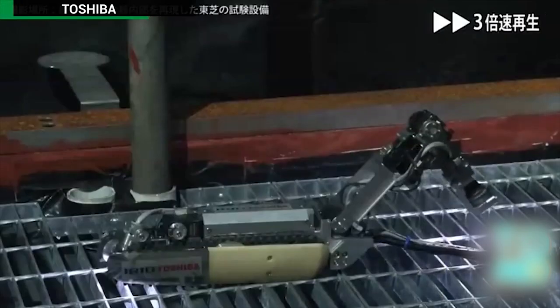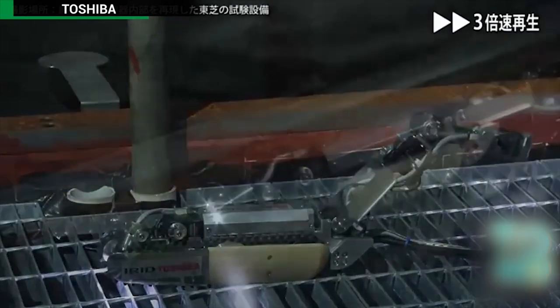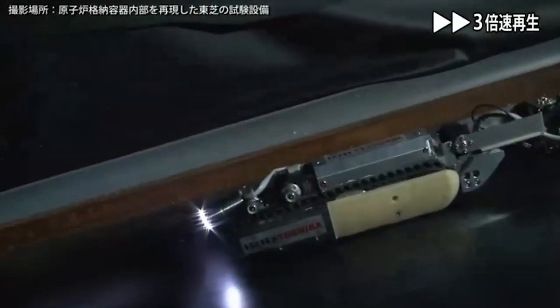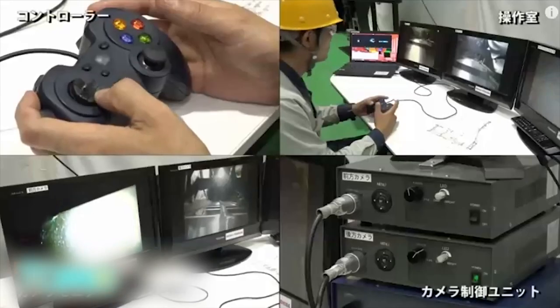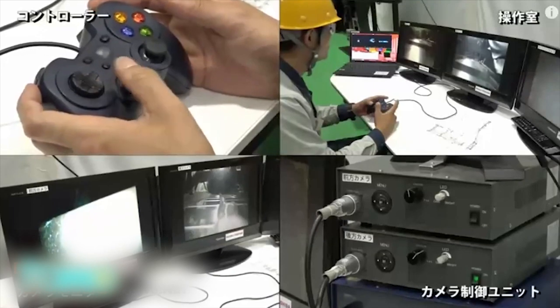Toshiba's scorpion-like robot will enter Fukushima nuclear power plant. Toshiba and the International Research Institute for Nuclear Decommissioning have announced that they will use a robot to survey conditions inside the Fukushima Daiichi nuclear power plant.